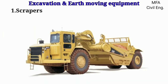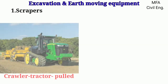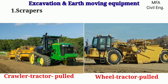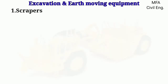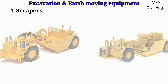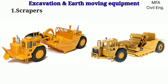Scrapers are classified as crawler tractor pulled and wheel tractor pulled, depending on the type of tractor used to pull them. The capacity of the scraper may be specified as the heaped capacity of the bowl, expressed in cubic meters. Scrapers are either cable or hydraulically operated.